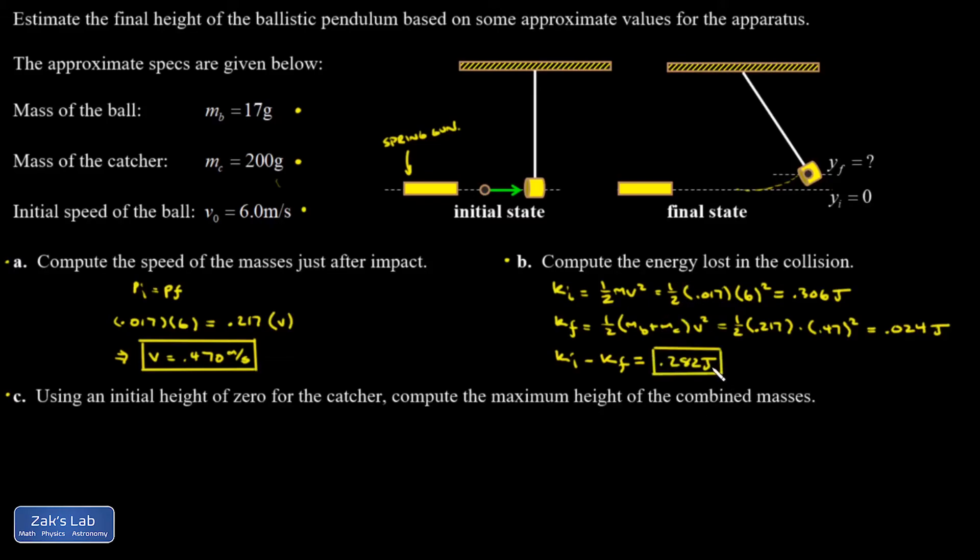After the collision, energy is conserved as the pendulum rises to maximum height. I'm looking at an energy conservation problem where right after impact is the initial state and maximum height is the final state. Initially, all energy is kinetic: one-half times the total mass times v squared, where v is from part A.